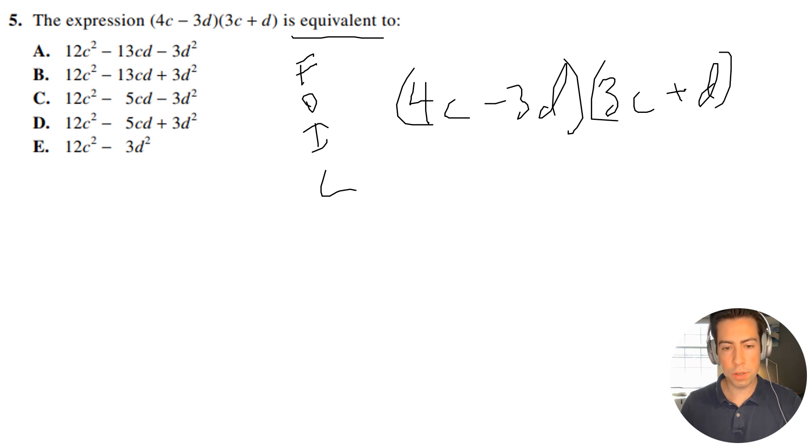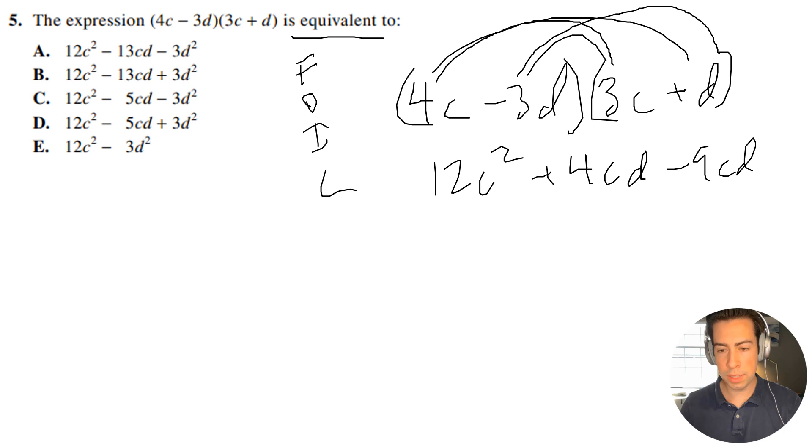Okay, so what we're going to do is multiply the first terms together. So it's going to be 12c squared, and then we're going to do the outer term, so we're going to get plus 4cd, and we'll do the inner term, so it's going to be negative 9cd, and then we're going to do the last term, so it's going to be negative 3d squared.